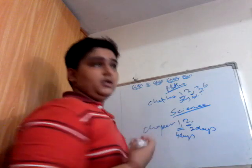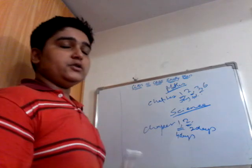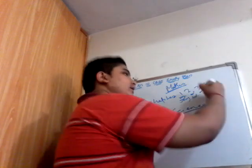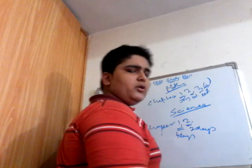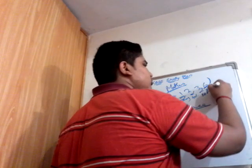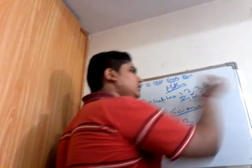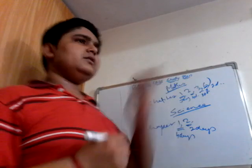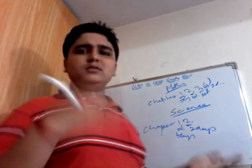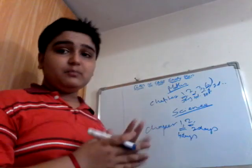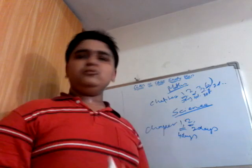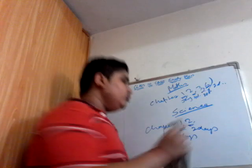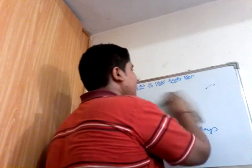In science, always start with Chapter 1 because it is the foundation of your entire 10th standard chemistry. This chapter introduces chemical equations — a word you're hearing for the first time — so you must be very accurate. Focus on naming equations, identifying parts of equations, and especially balancing. Balancing equations is extremely important; do not move to the next concept until you've mastered it.